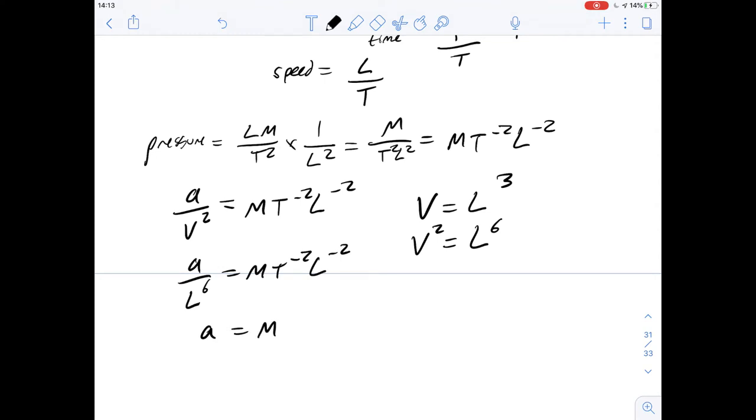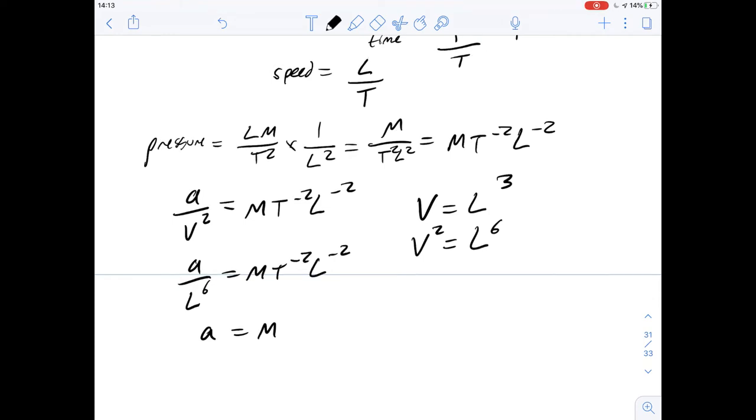So A over L to the sixth is going to be T minus two L minus two. So if we bring the L to the power of six over, we get, if we multiply both sides by L to the sixth, I should say, we get L to the five T to the minus two. And that gives us an answer of B for this question.